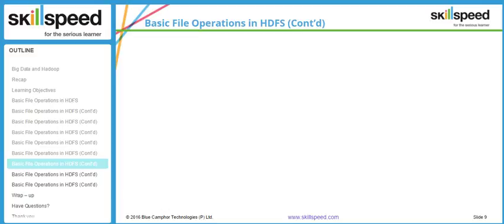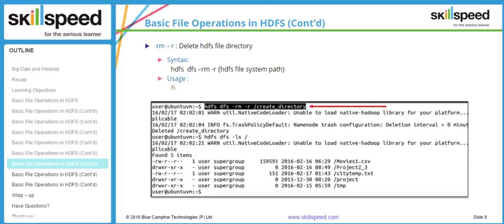The next command is the rm -R command. This command is used to delete an entire directory. The syntax is: hdfs dfs -rm -R and the directory you want to delete. Here I typed hdfs dfs -rm -R /create_directory, which effectively deletes the whole directory from Hadoop. After that, I typed the ls command and the directory called create_directory is no longer available.